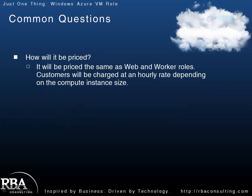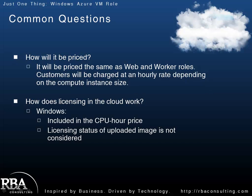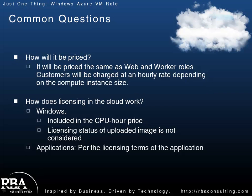In terms of pricing, it's the same as web and worker roles. As I covered in the role overviews presentation, the pricing is essentially 12, 24, 48, and 96 cents an hour, and that still applies to the VM role. There's no additional price to run your own VMs in the Azure environment. In terms of licensing, Windows is included in that CPU price — so for 12 cents an hour, that includes the Windows Server 2008 R2 Enterprise licensing. If you have other applications installed on that VM, you're responsible for their licensing. You have to think about what your licensing cost is if you're running two instances, etc.